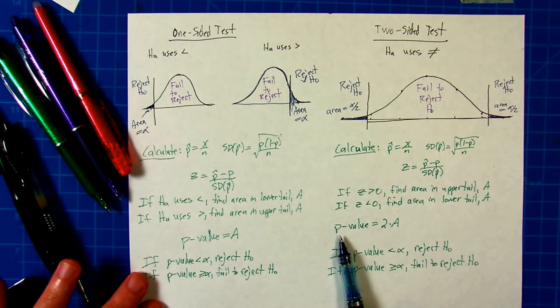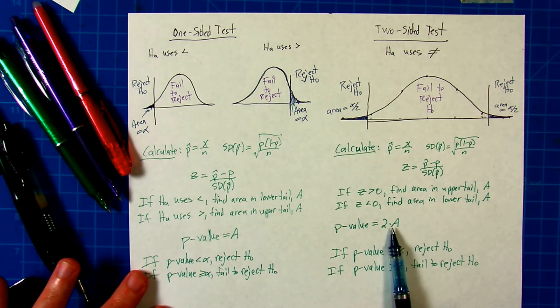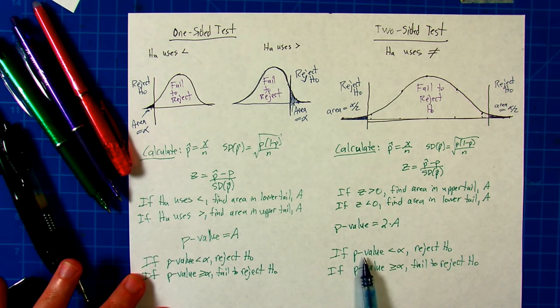The p-value here is twice the area you get there. Why is that? Because your goal is to always compare the p-value to alpha. If the p-value is less than alpha, you can reject the null hypothesis.